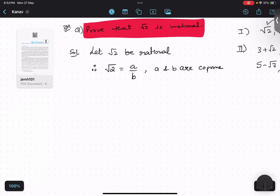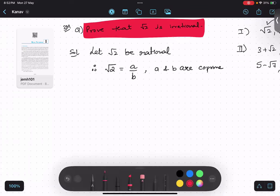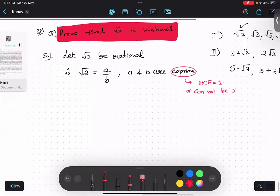First of all, just look at the screen. What are coprime? Any idea? Coprime numbers are where HCF is 1. That means there is no other common factor. It cannot be reduced. That is the basic understanding. That is why we always take coprime.